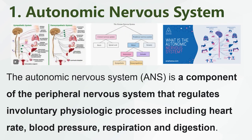The Autonomic Nervous System is a component of the Peripheral Nervous System that regulates involuntary physiologic processes, including heart rate, blood pressure, respiration and digestion.